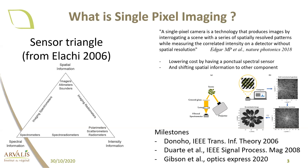Single pixel imaging uses a one-pixel sensor to successively interrogate a series of spatially resolved patterns while measuring the correlated intensity on the detector. I recommend the good review by Edgar and Padgett in Nature Photonics. This permits, by having just one punctual sensor, access to greater performance and other aspects of the physical signal, and also to reduce cost for similar intensity or spectral quality information.